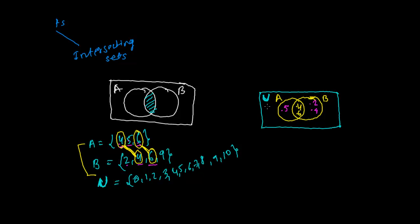Whatever elements are left from the universal set, write them in the outer region outside A and B. We don't have 0 in A or B, so write 0; then 1; 2 is in B already; 3 is not there, so write 3; 4, 5, 6 are inside; 7, 8 go in the outer region; 9 is in B already; and 10 goes in the outer region. If you forget the commas while writing fast, that's okay, but don't forget to write the elements properly.